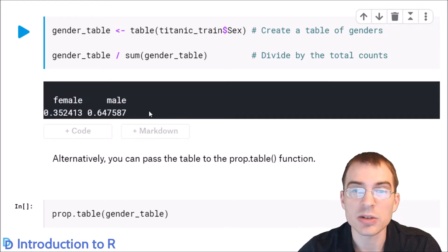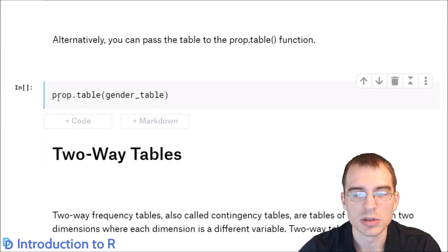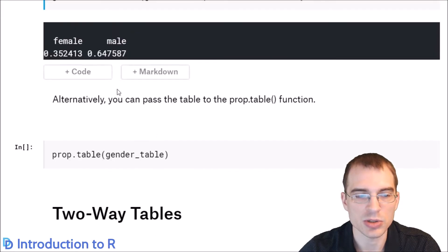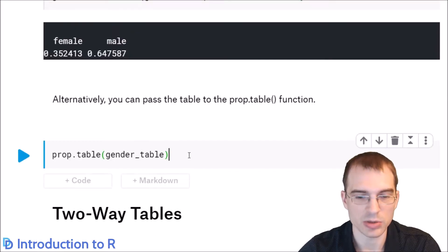Now, there is an easier way to do this, actually, in R. Instead of having to manually carry out this division, you can instead use this special extra table function called prop.table, and that just creates a table of proportions instead of a table of counts. So this will produce essentially the exact same thing that we did above.